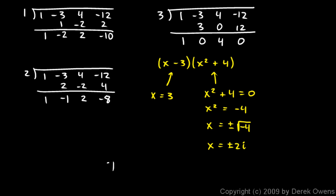So the zeros are, and there are 3 of them. The zeros are 3, 2i, and negative 2i.